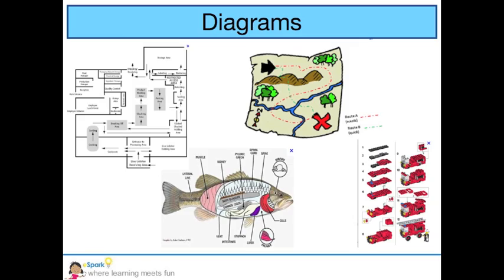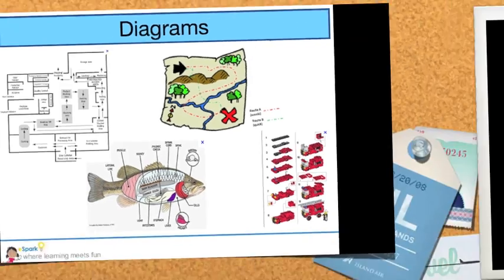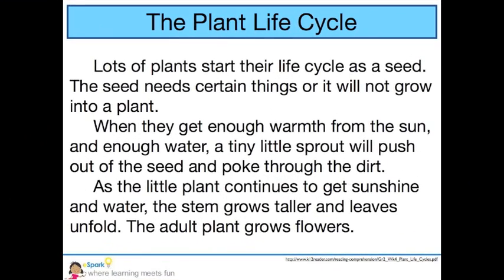Let's read some information I found online about plants. The Plant Life Cycle: Lots of plants start their life cycle as a seed. The seed needs certain things or it will not grow into a plant. When they get enough warmth from the sun and enough water, a tiny little sprout will push out of the seed and poke through the dirt. As the little plant continues to get sunshine and water, the stem grows taller and leaves unfold. The adult plant grows flowers.